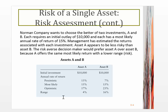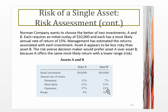Here we have a company choosing between two investments, A and B, spending $10,000 on each. In a pessimistic environment, Asset A expects 13%, most likely 15%, and optimistic 17% — a range of 4. For Asset B: pessimistic is 7%, most likely 15%, optimistic 23% — a range of 16. Now let's talk about how we'll ultimately measure the riskiness of these two investments.